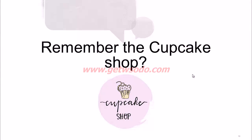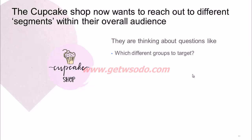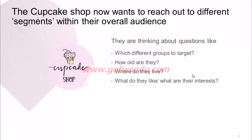Let's understand this with an example using the cupcake shop from previous modules — an offline store that sells cupcakes. The cupcake shop wants to reach out to different segments within their overall audience. They'd be asking questions like: which different groups should they target? How old would their audience be? Where would these people be living? What would they like? What would their interests be? These are the kinds of questions that help define the target audience and segment them into specific groups for relevant messaging.